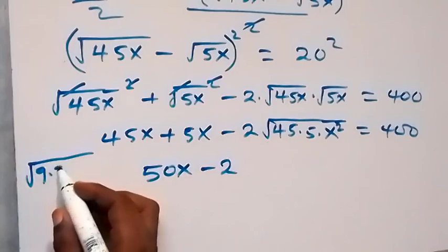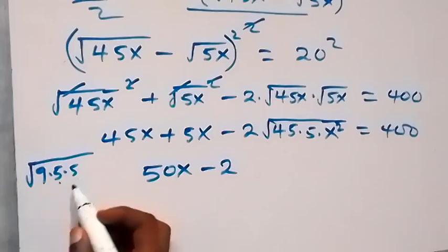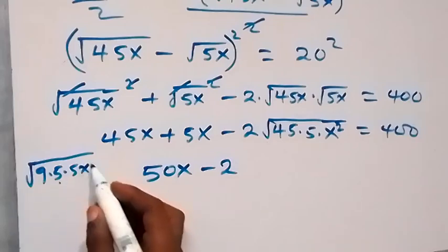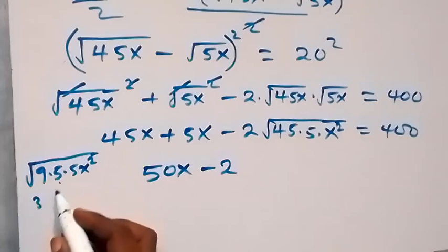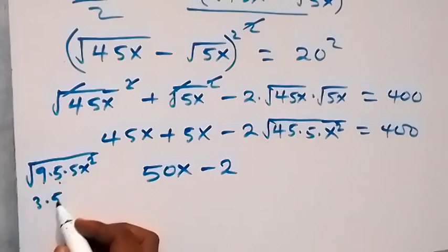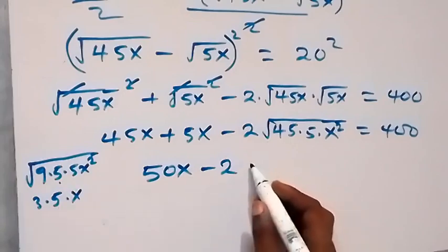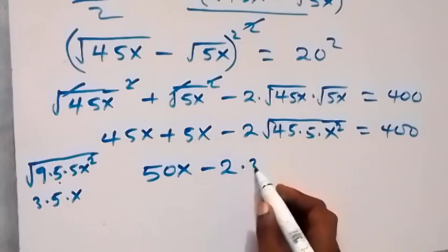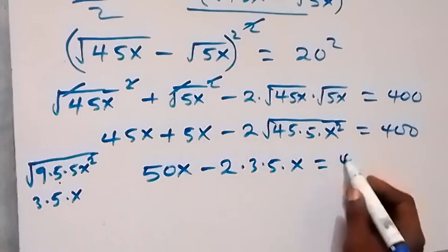45 times 5 is 225, which is 9 times 25. So root 225 is 15. We then have: 45x plus 5x minus 2 times 3 times 5 times x equals 400, which gives 50x minus 30x equals 400.